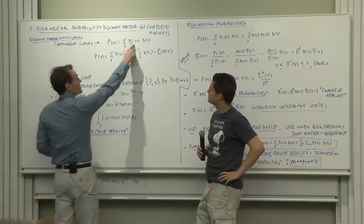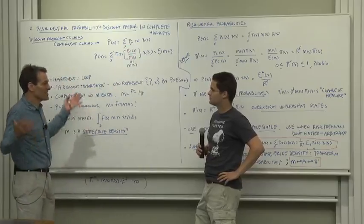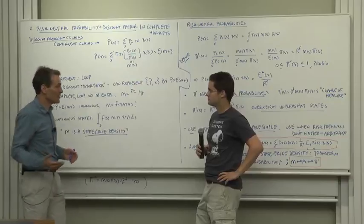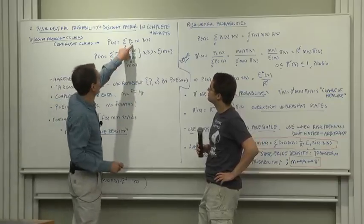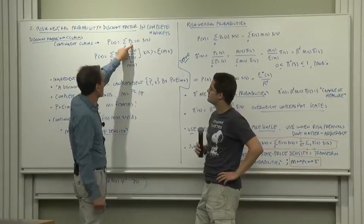Why? Because there's only one set of contingent claims prices. You can't have multiple prices for the same thing, otherwise you and I could make a whole lot of money. So there is a unique contingent claims price.